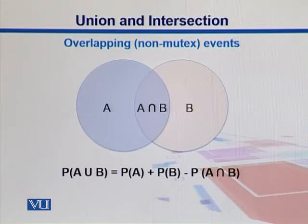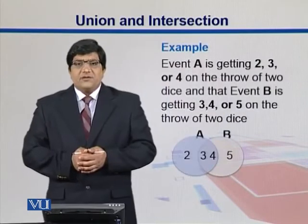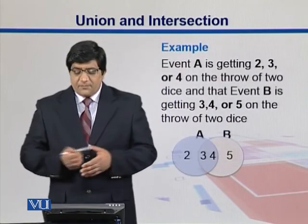Why do we take this intersection out? Because if we don't, we are overcounting the events which are common to both of them. Let's elaborate this with an example.